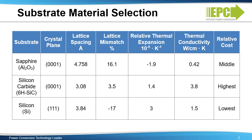Silicon is not an ideal base for a GAN heteroepitaxial structure due to lattice mismatch and the mismatch of the thermal expansion coefficients. Silicon, however, is the least expensive material, and there is a large and well-developed infrastructure to process devices on silicon substrates.